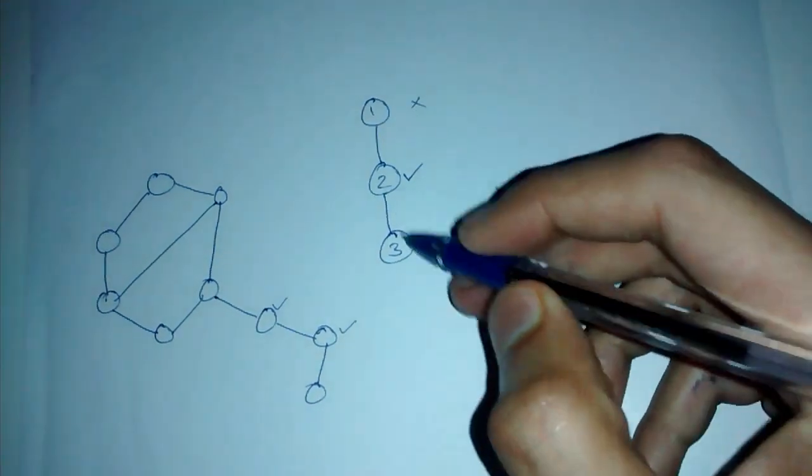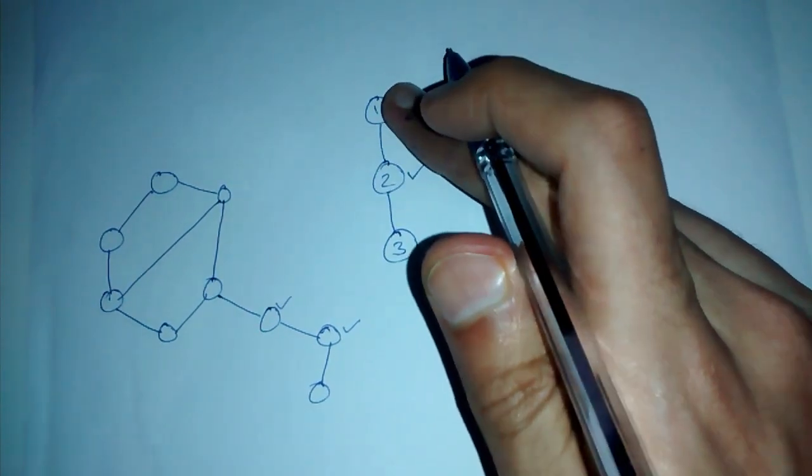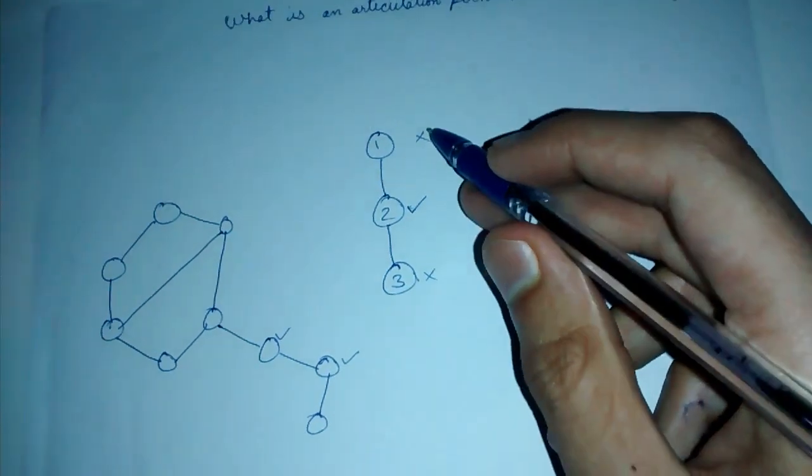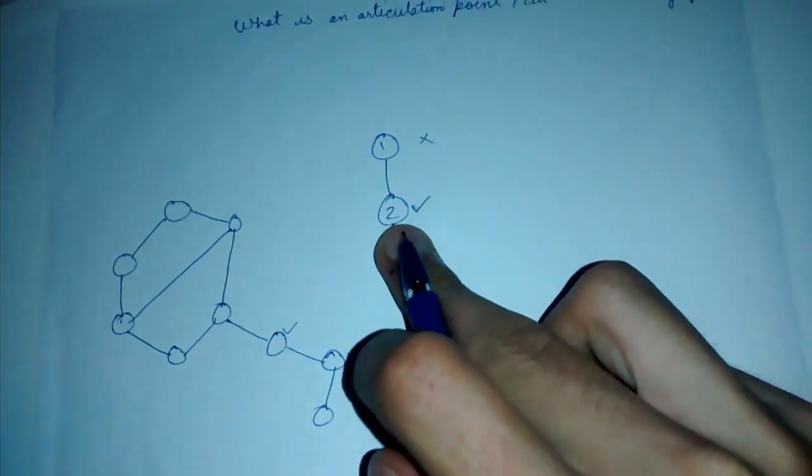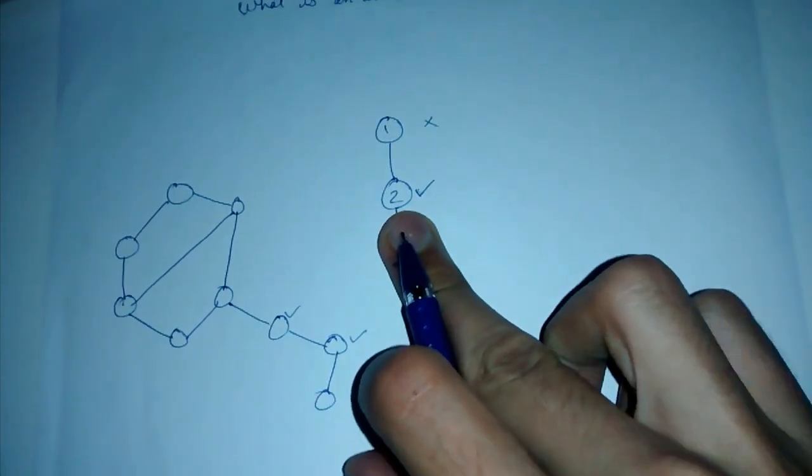So in this connected graph, if we remove two, then the graph is disconnected into this and this, two graphs. So two is a cut vertex. One is not. Three is not, because removing three will give us one connected with two, which is a connected graph.